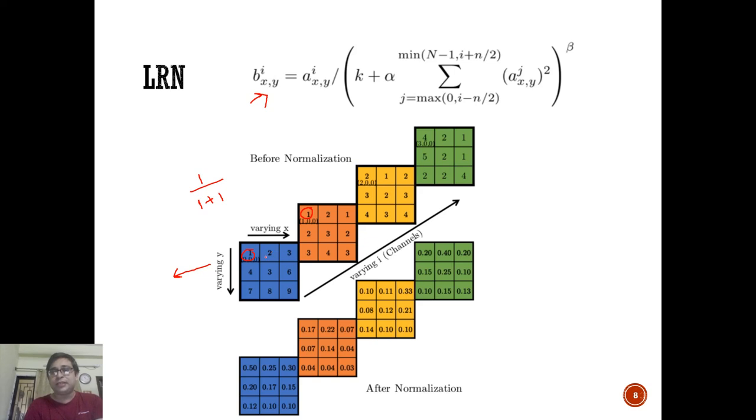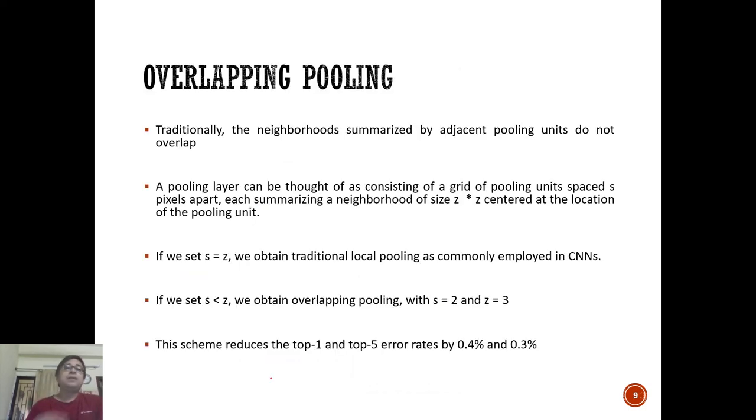Similarly, if you take this cell with intensity value two, you'll have two square plus two square in the denominator, so two divided by four plus four gives you 0.25. That's how LRN works and this was one of the things AlexNet proposed.